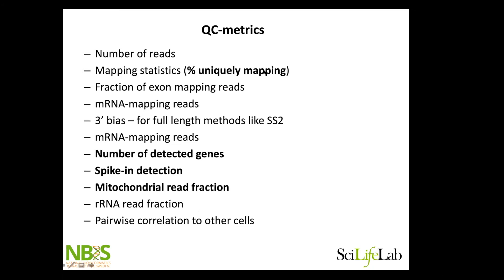The things I would mainly look at are number of detected genes and mitochondrial read fraction. I always look at those. If it's Smart-seq2, I would also look at percent uniquely mapping and spike-ins. You can add all these different things, and a lot of them are correlated depending on the samples. If the samples are really tricky, you might want to look at all different QC metrics you can think of, but at minimum these ones you should always look at.